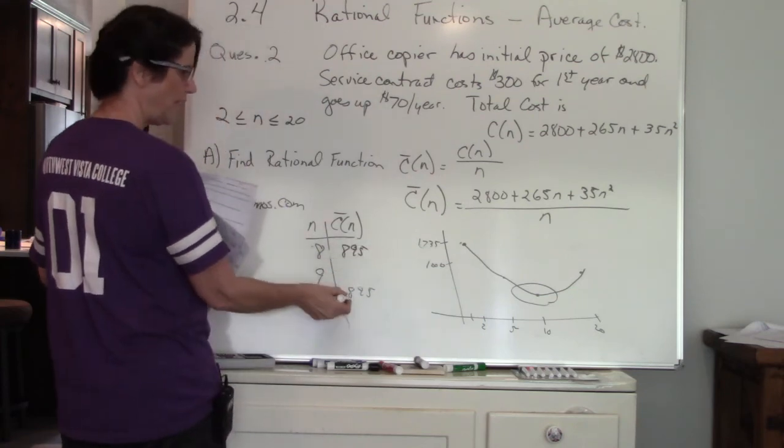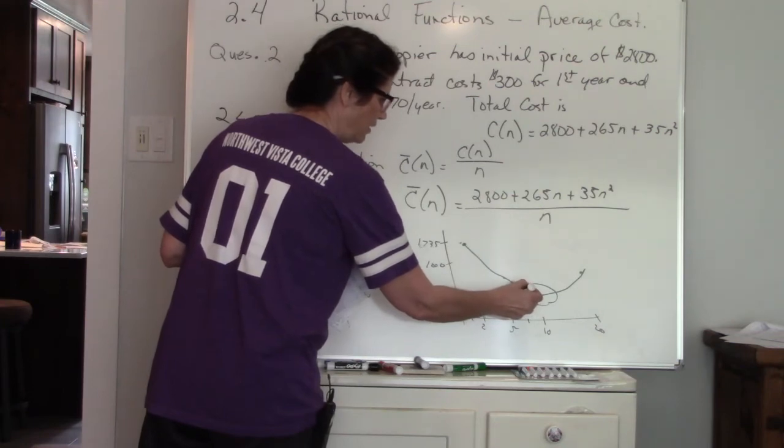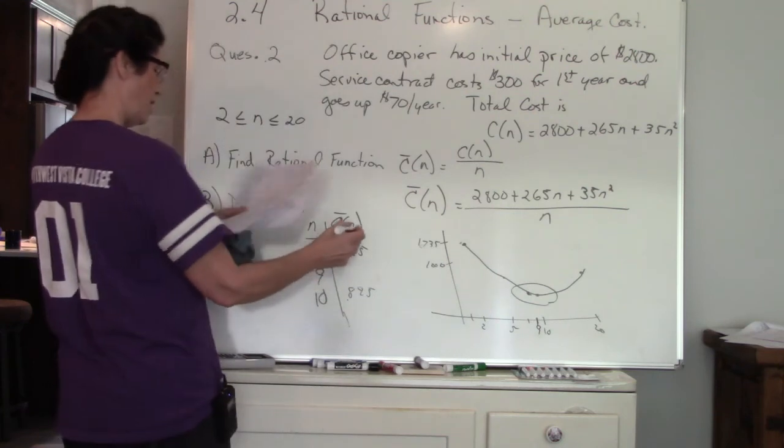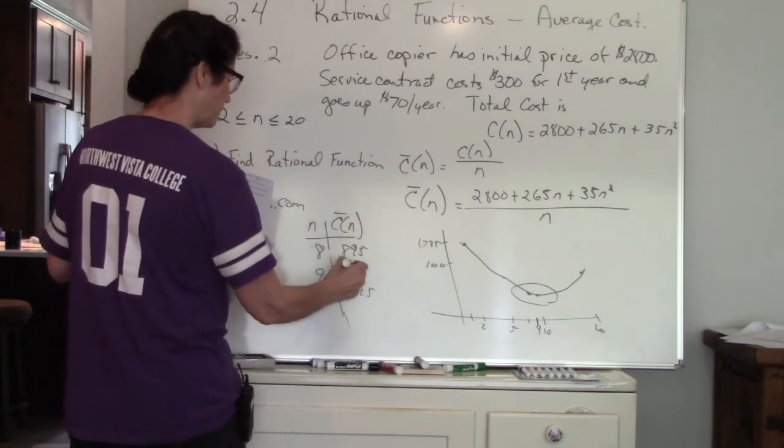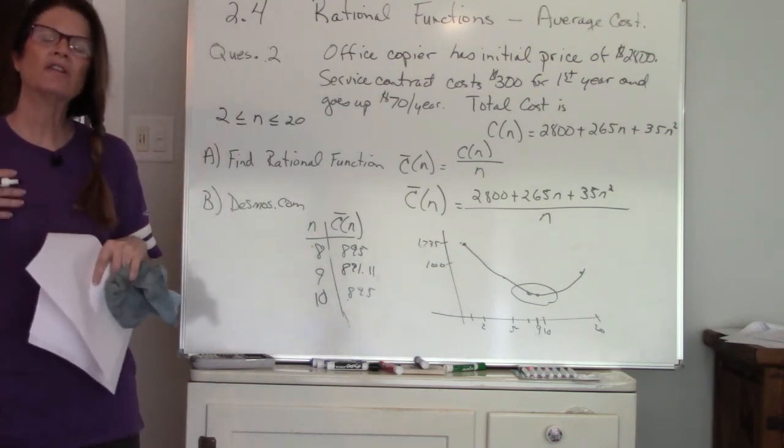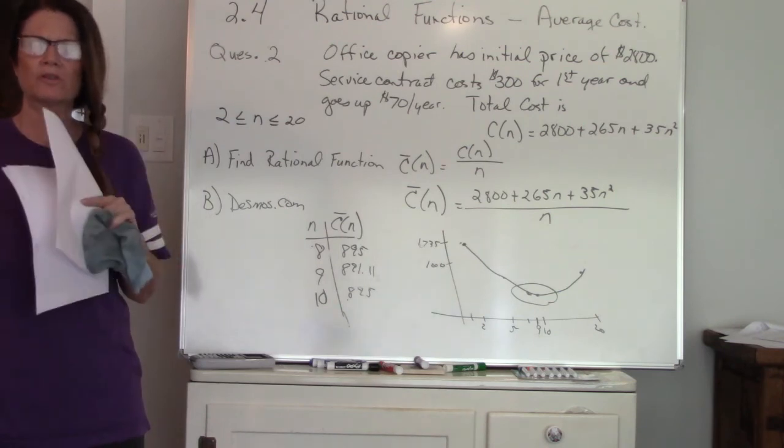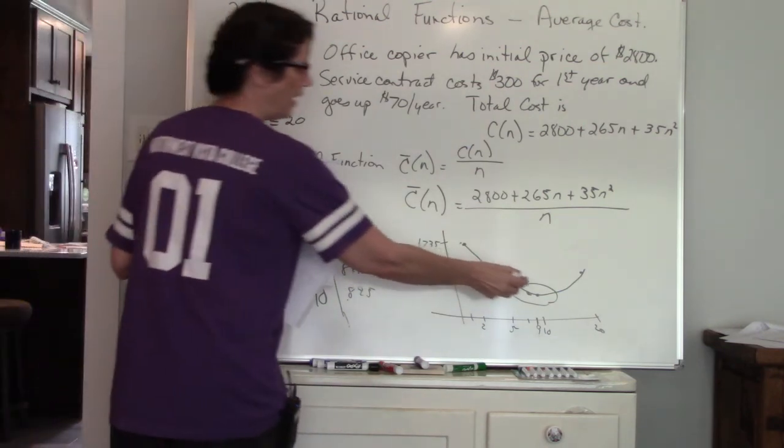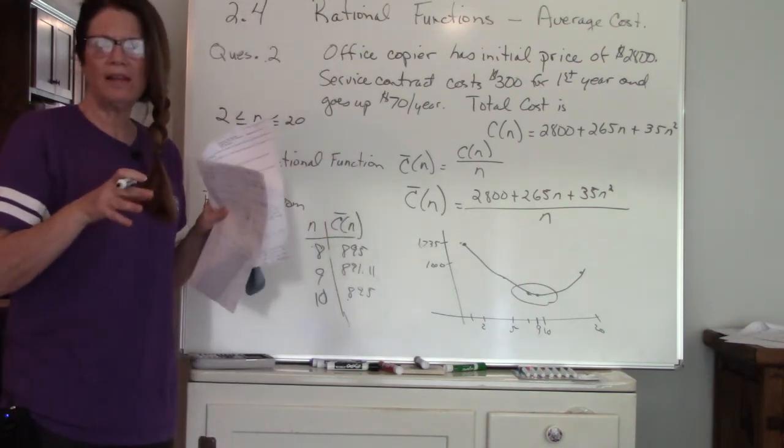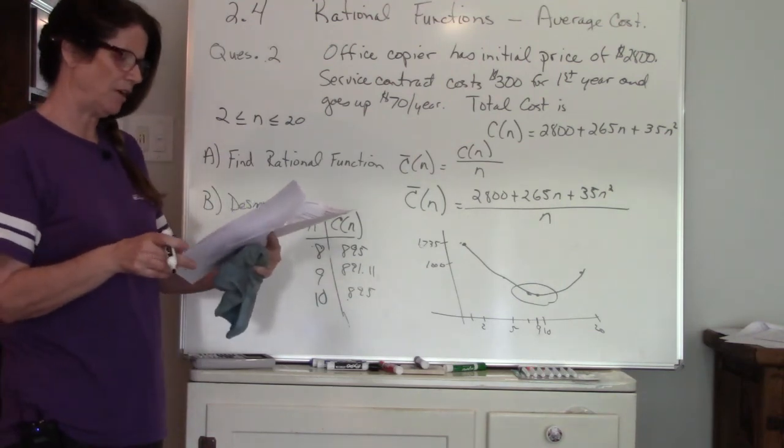Did you notice 8 and 10 is the same? So I'm going to try 9. 9 ended up being 891.11. That's my lowest value. They're not going to make you do 8.1, 8.2, 8.3. They're just having you do whole numbers. Once you look at your graph and you see where the lowest area is, pick values around that and see if you can find the lowest value. So 9 is going to be my absolute lowest value.